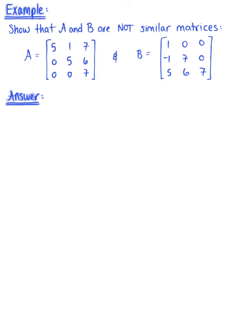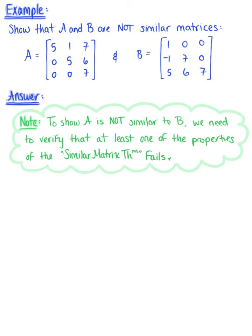Show that matrix A and matrix B are not similar matrices. We are given two three-by-three matrices here. To begin, we want to note that in order to show that matrix A is not similar to matrix B, we need to verify that at least one of those seven properties found in the similar matrix theorem is not holding true in this situation.